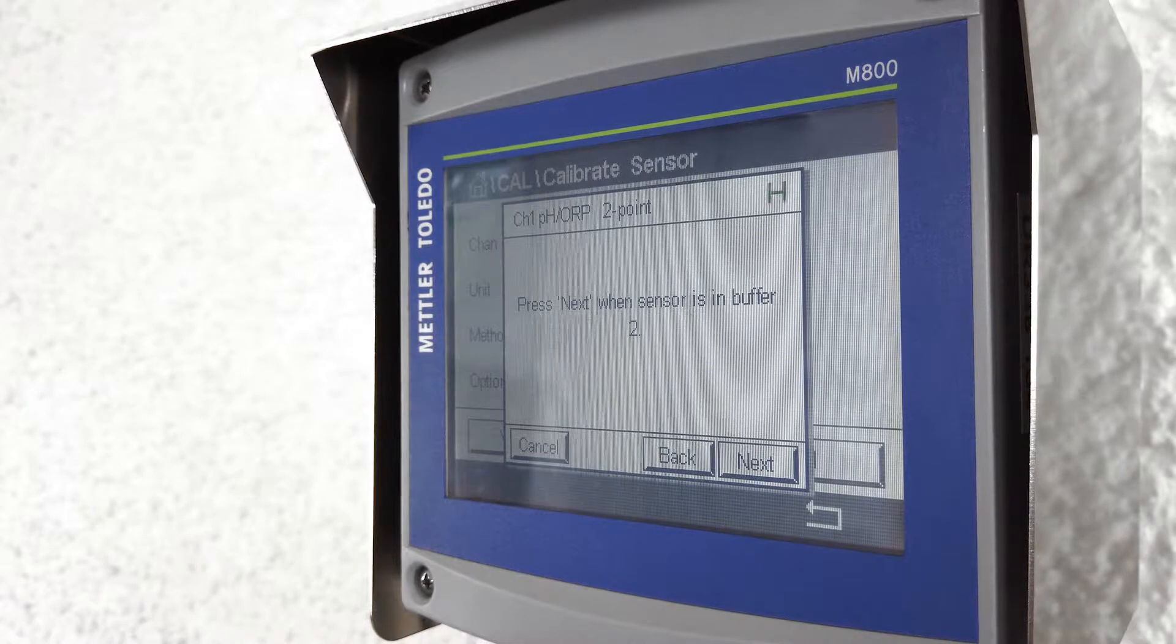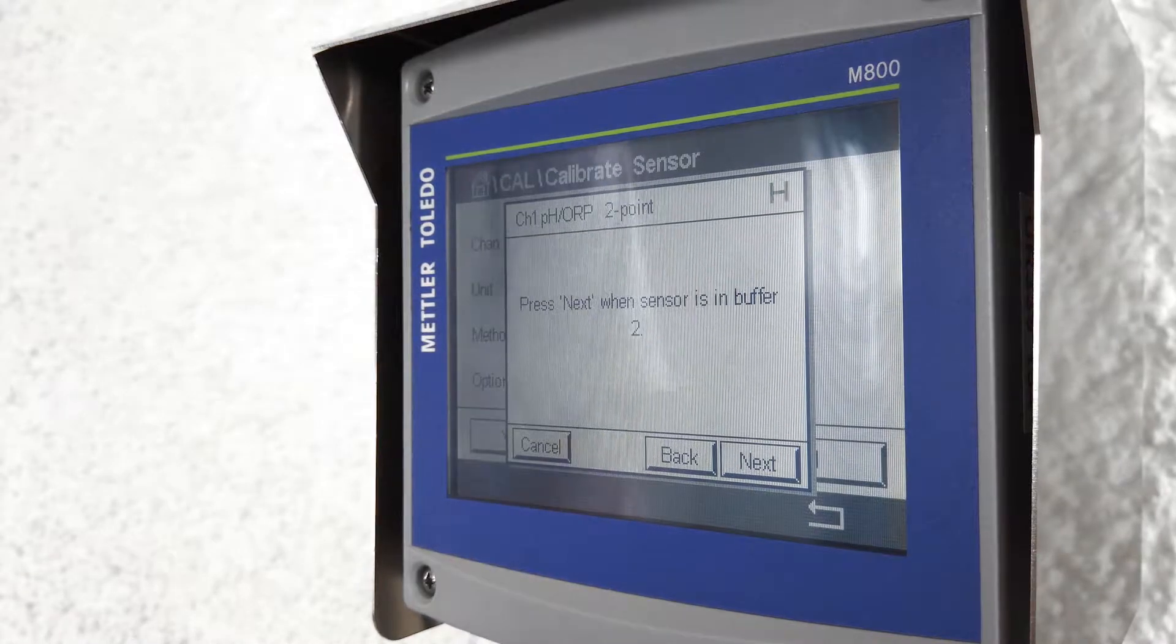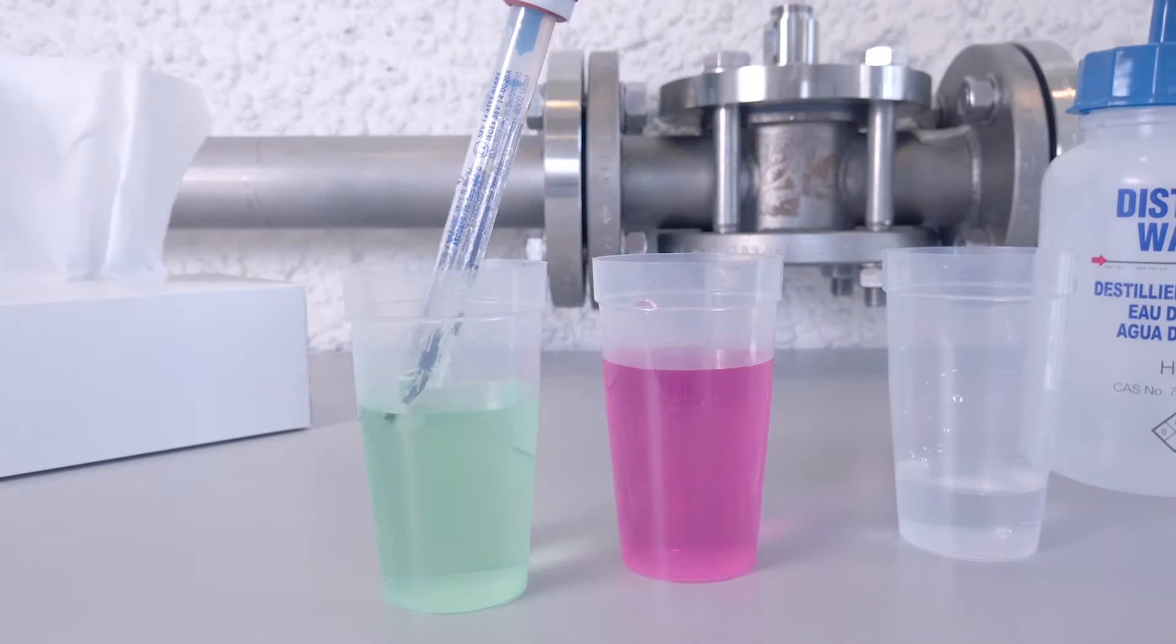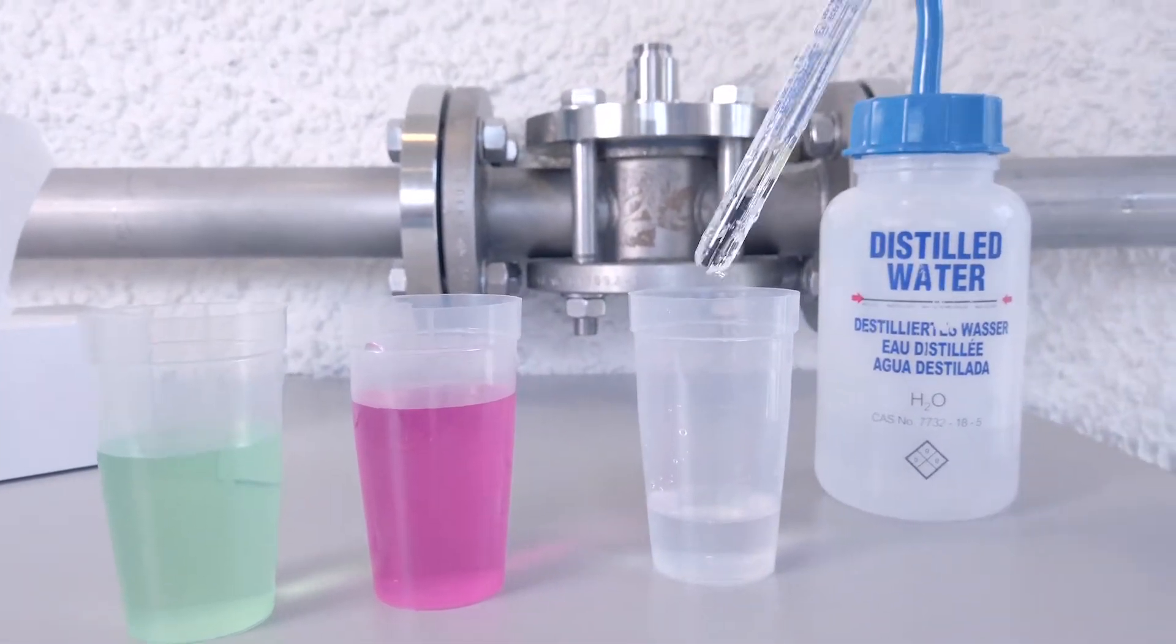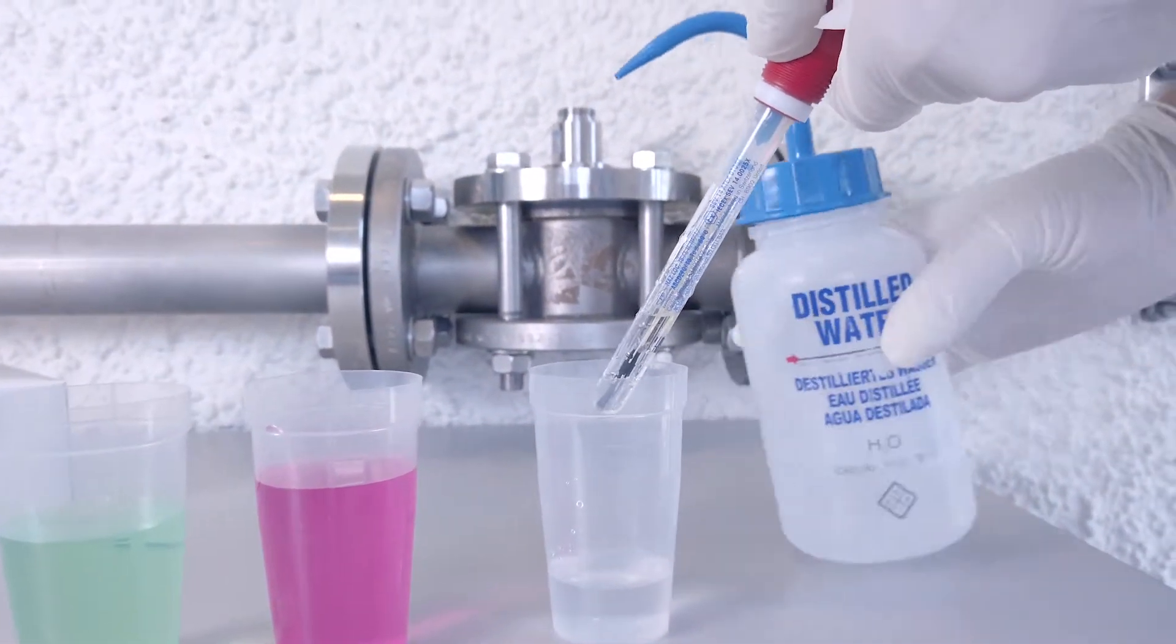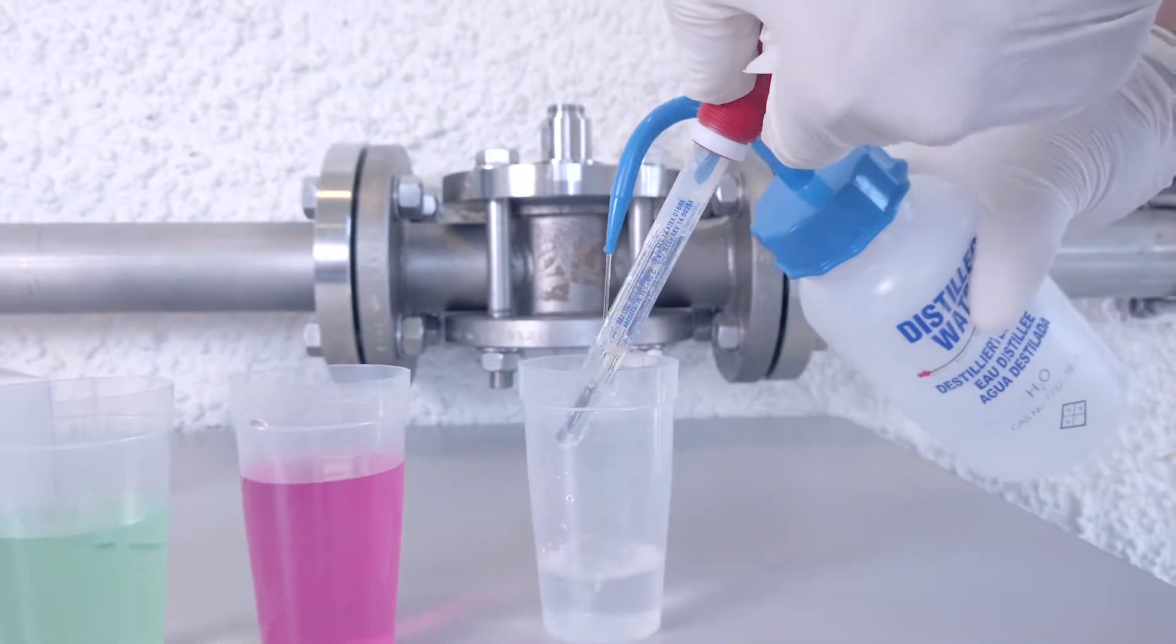Now the transmitter instructs you to put the sensor into the second buffer. In this case it's pH 4. Remove the sensor from the first buffer, rinse it again with distilled water, pat it dry and place it into the second buffer.